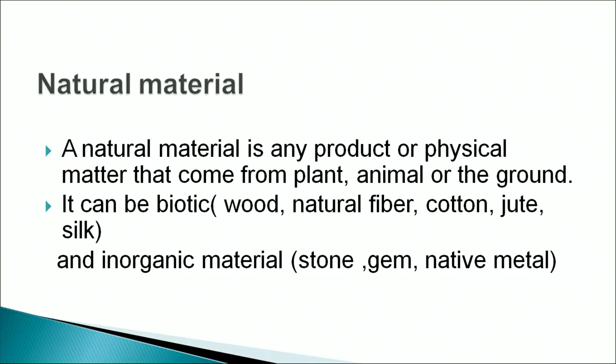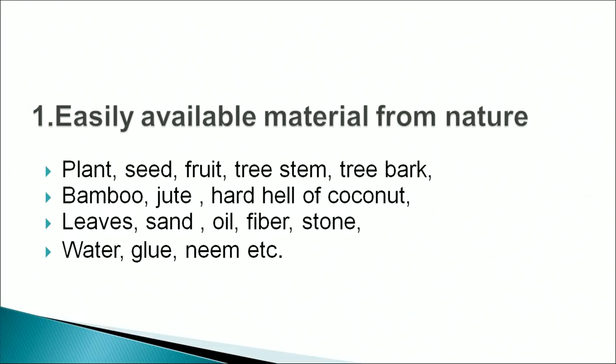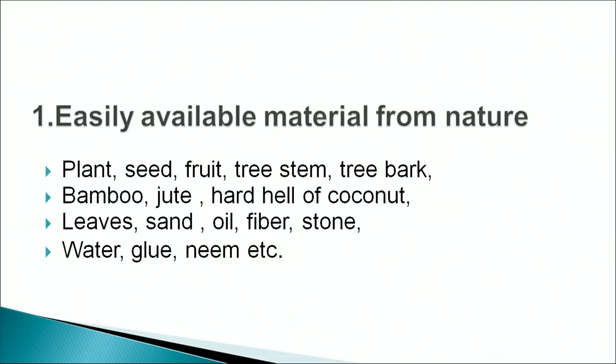Natural material can be biotic — meaning wood, natural fiber, cotton, jute, silk — or inorganic, which includes stone, gems, and native minerals. Material available from nature includes plant seeds, fruits, tree stem, tree bark, bamboo, jute, hard shell of coconut, leaves, sand, oil, fiber, stone, water, and glue. These are easily available natural materials we can use for work education activities.